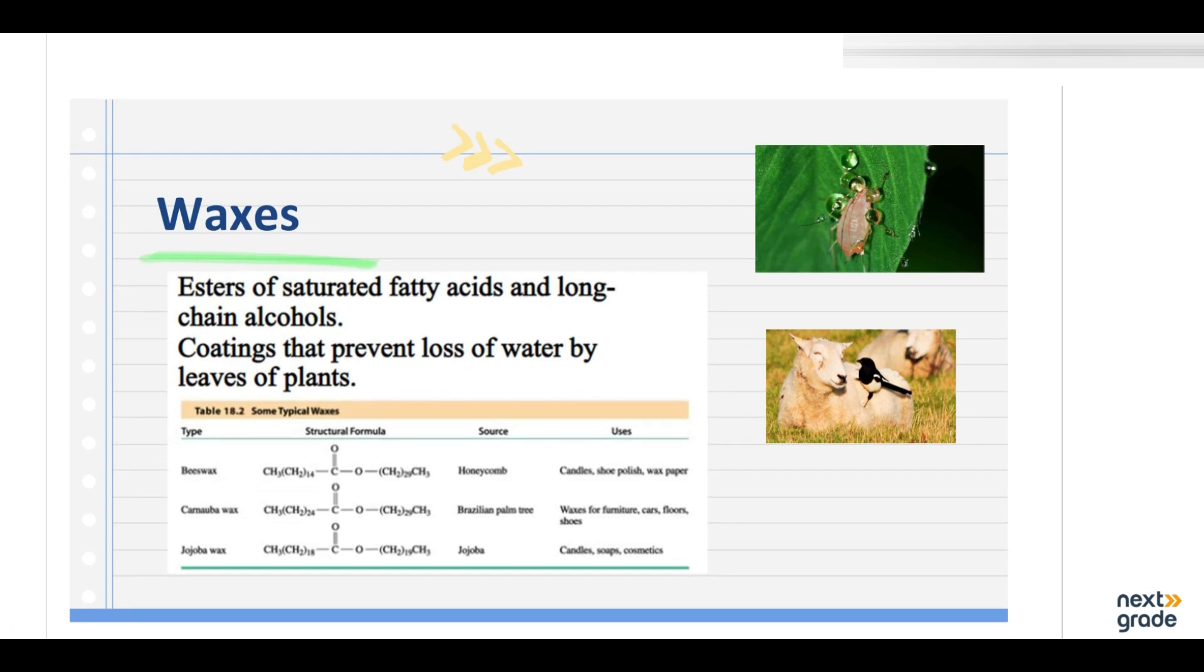So waxes are basically the esters of saturated fatty acid and long chain alcohol. Like if you can see here below, you can see how long chain of alcohols are and they are the esters of the saturated fatty acid. Chemically, they are a long chain of alkanes. As you can see in all these examples, these are the long chain of alkanes with odd number of carbon. Now we will always be odd numbers, like from C25 to C35.